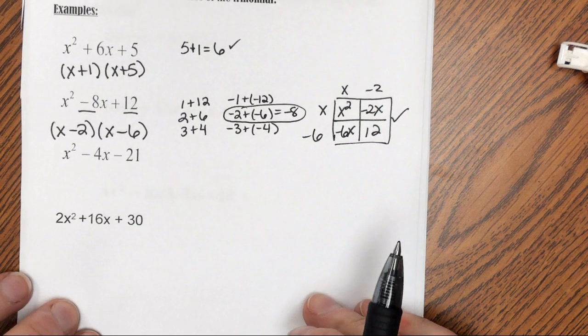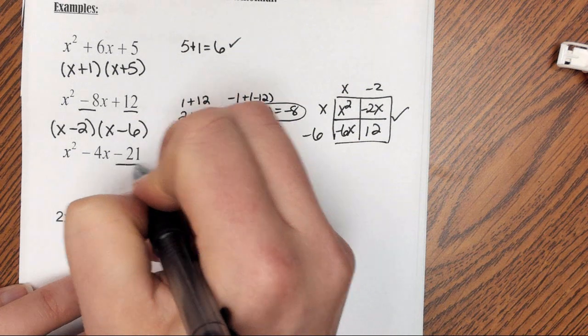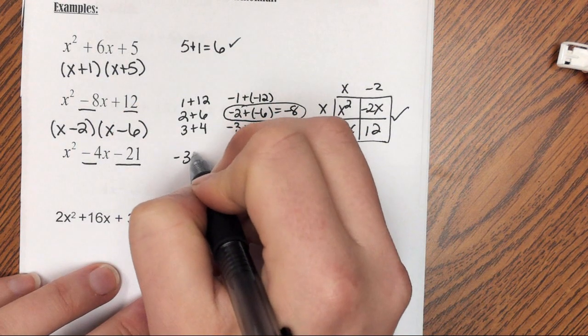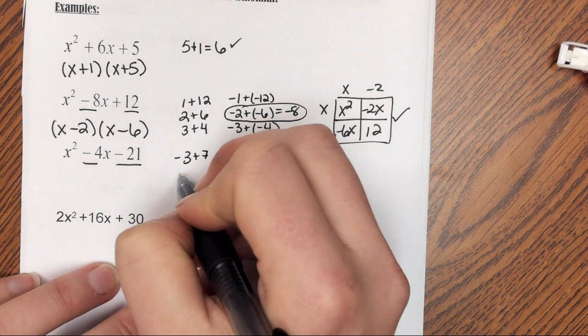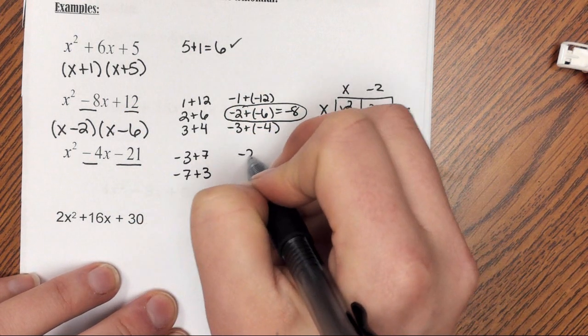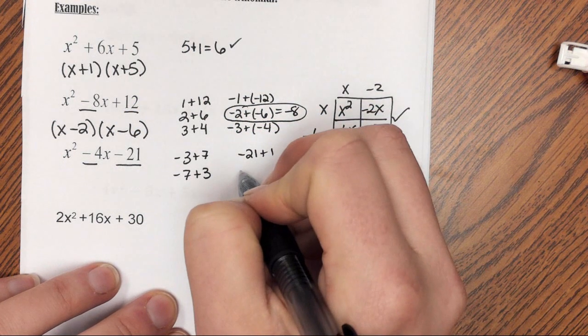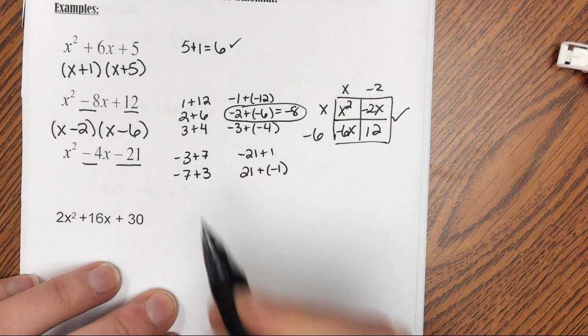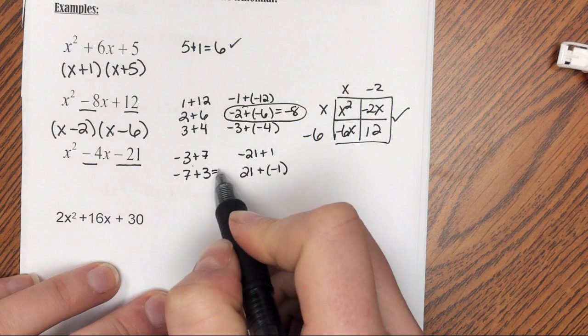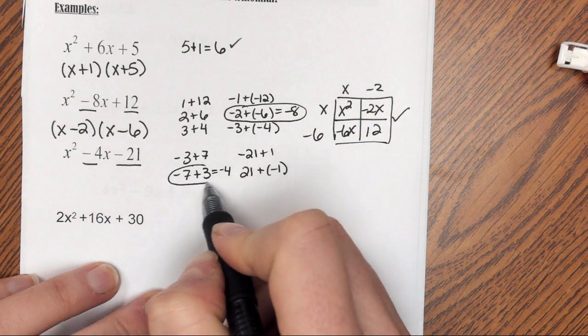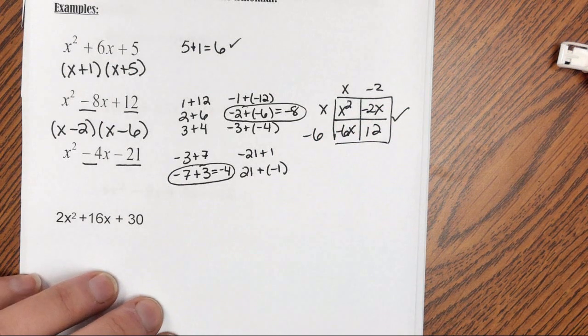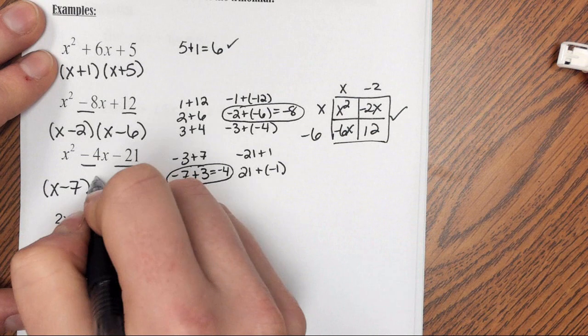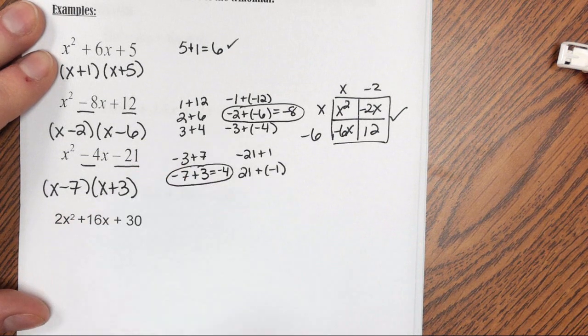Alright, next example, I need factors of negative 21 that add to be negative 4. So I could have negative 3 and 7, and I could have negative 7 and 3. I could have negative 21 and 1, and I could have 21 and negative 1. Of those, negative 7 plus 3 is what adds to be negative 4, so that's my factor pair. So my answer is going to be x minus 7 times x plus 3, and those can be in either order.